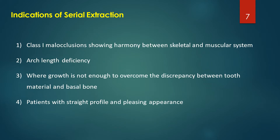Indications of serial extraction include: Class 1 malocclusions showing harmony between the skeletal and muscular system; arch length deficiency where growth is not enough to overcome the discrepancy between tooth material and basal bone; and patients with a straight profile and a pleasing appearance.